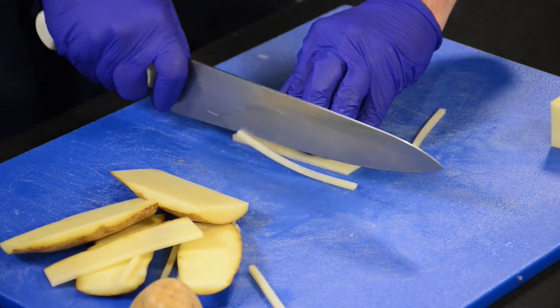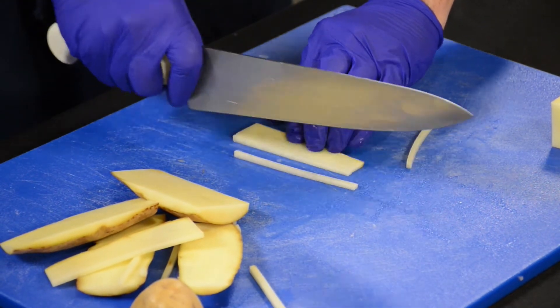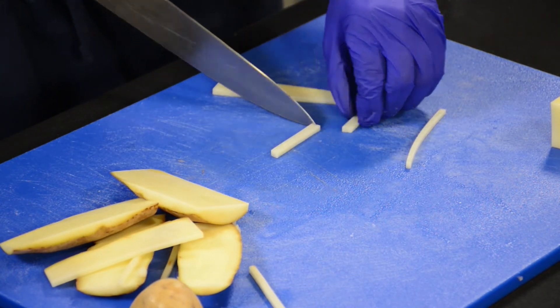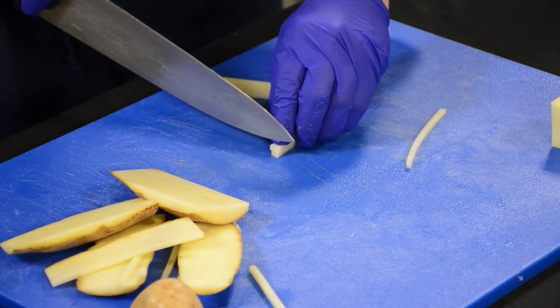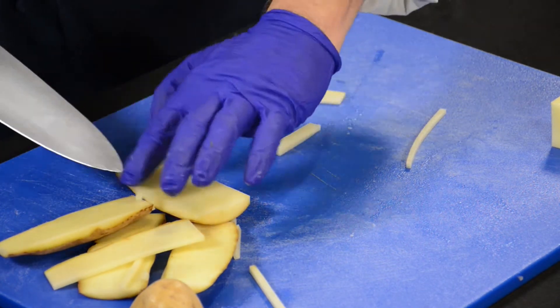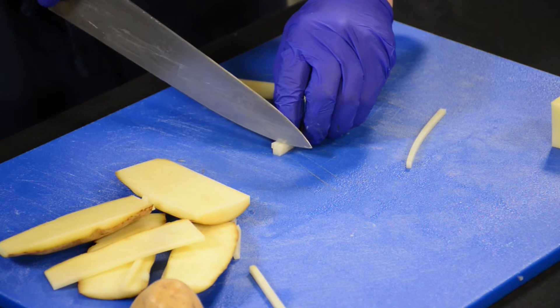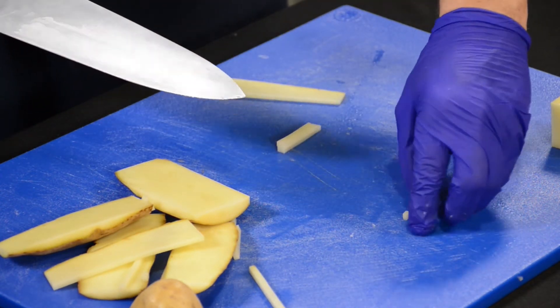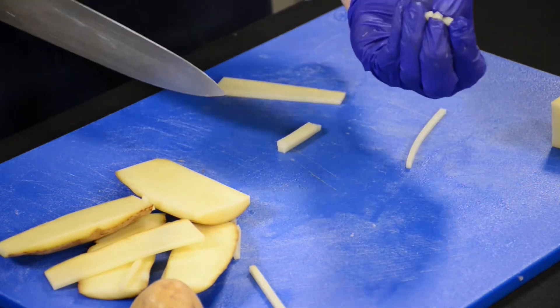Another way to do your brunoise is you can take your perfectly cut julienne, even the ends, and try not to use a white cutting board to do this because you will not be able to see what you're doing there.